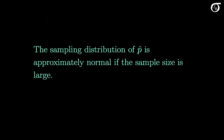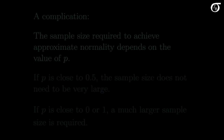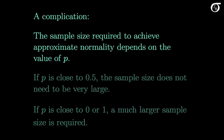The sampling distribution of P-hat is approximately normal if the sample size is large — this is the central limit theorem at work. However, the sample size required to achieve approximate normality depends on the value of P. If P is close to 0.5, the sample size does not need to be very large, but if P is close to 0 or 1, a much larger sample size is required. So it's tough to give a simple, all-encompassing rule for when the normal approximation is reasonable.